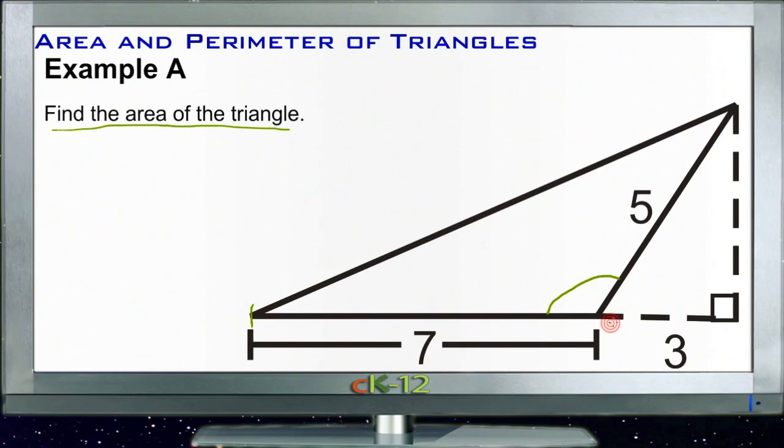We do know that the base of the actual triangle is 7 units, and the slant height is 5 units. What we don't know is the actual height of the triangle. So we could do base times something, but we don't know what to multiply the base by to get our area, which is base times height over 2.